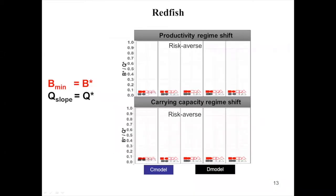I also found that when the population growth parameter was low — for example, in redfish — the average yield is quite similar across population models and utility functions. In this situation, the optimal harvest control parameters Bmin and Qslop did not change much between models, as shown in the plot by the colors: Bmin in red and Qslop in gray, for both risk-neutral and risk-averse models.